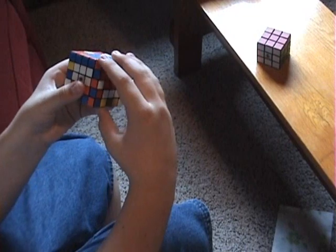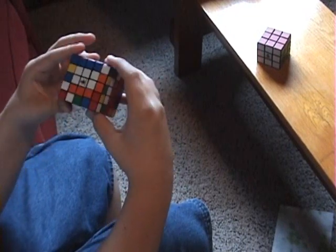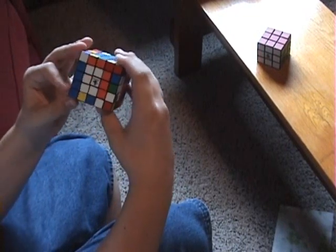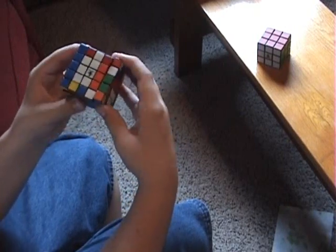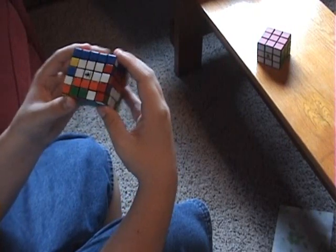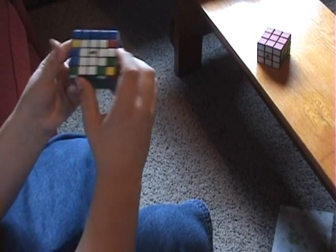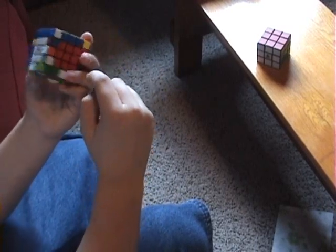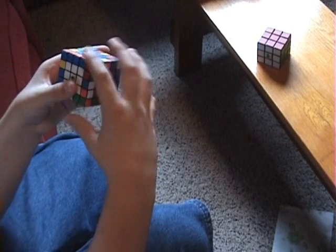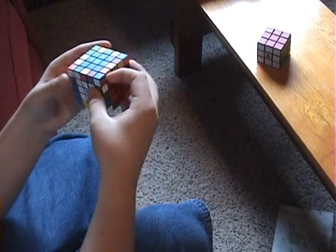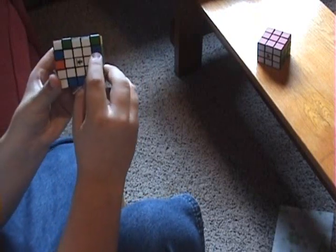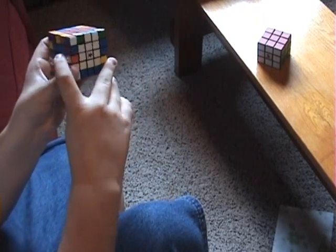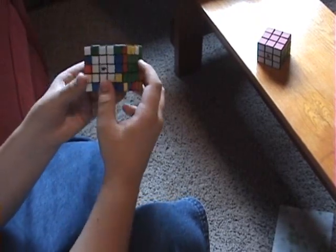So I line them up again, blue red, blue red. So it's going to be the bottom two layers this way to the right, and then go right side up, front counterclockwise, top clockwise, right side down, front clockwise. See, those two paired up.